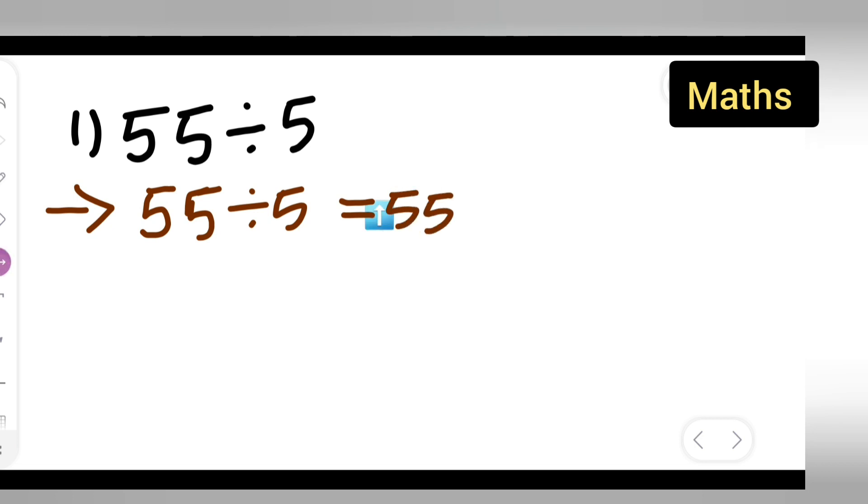What you will do is multiply it by the reciprocal. You have to multiply it by 1 upon 5. You'll have to multiply this number with the reciprocal of 5.